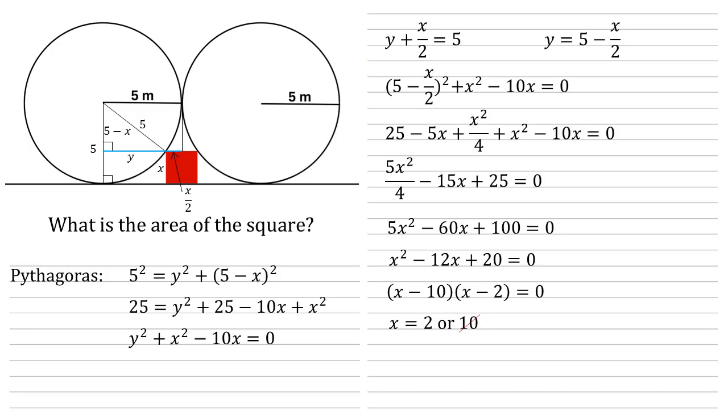Now we're after the area of the square. So if X is equal to two, we're going to square this to get the area. The area is two squared, which is equal to four square metres.